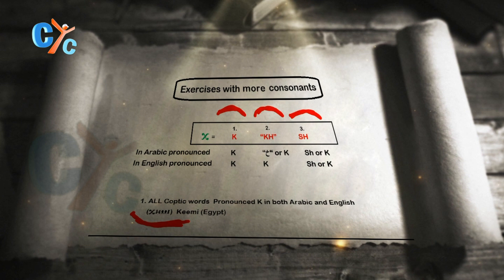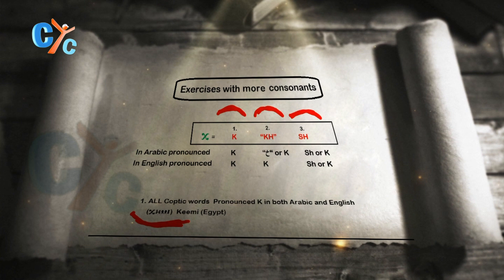Egypt has many other names. For example, it used to have the name Ika Ptah. 'I' means the home or the place where you live, 'Ka' means the spirit, and 'Ptah' is the main god of Memphis. Memphis was the capital of Egypt for a long time, so they called Egypt as a whole 'the place where the spirit of Ptah dwells.' Ika means place where it dwells, Ka means spirit, and Ptah is the name of the god.